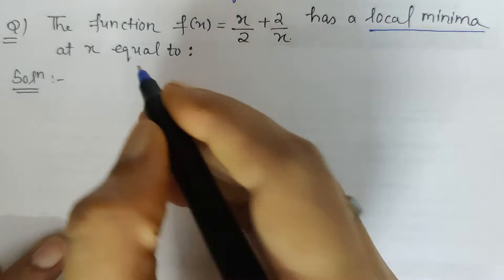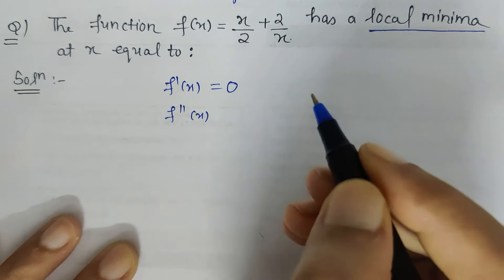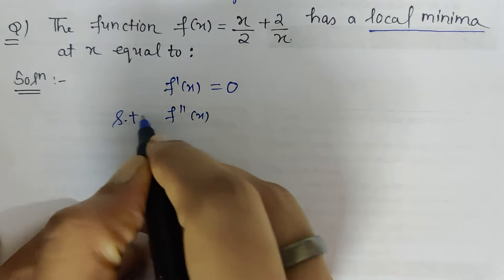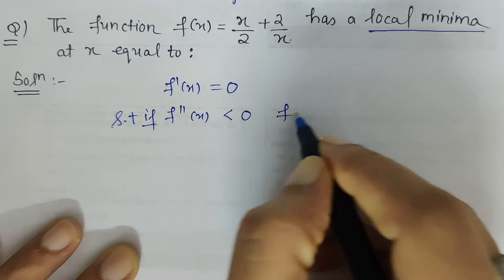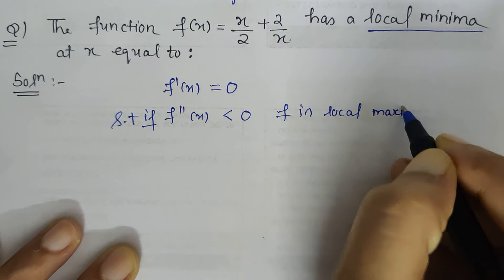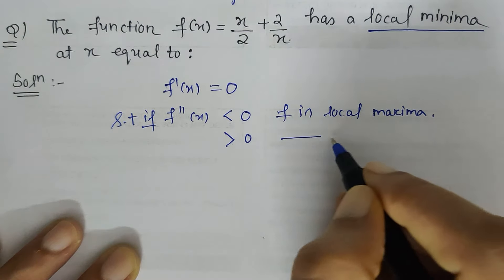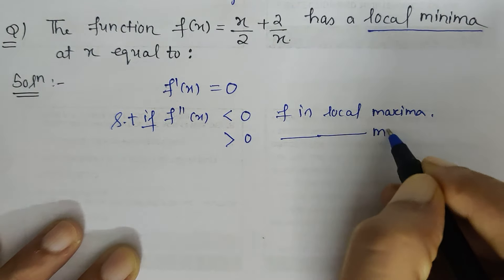Let me brief you. If I have a function f(x), I find f'(x) first, then f''(x). We compare f'(x) with 0. If f''(x) is less than 0 at the critical point, f has local maxima. If it is greater than 0, then f has local minima. We are interested in this part as per the question.